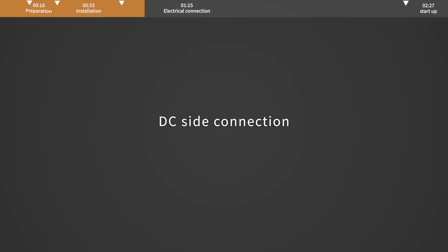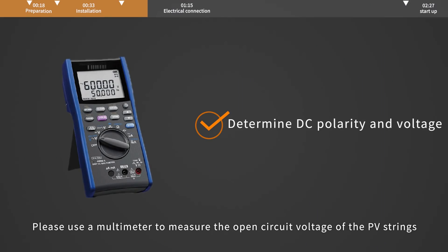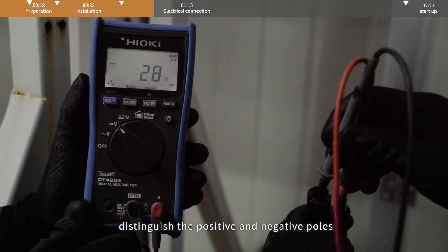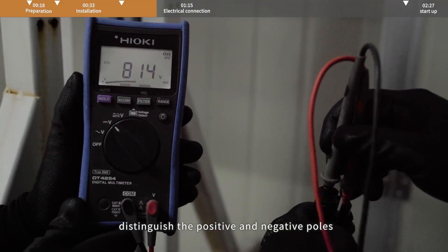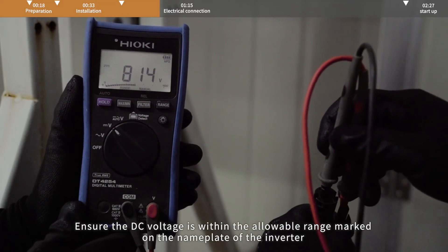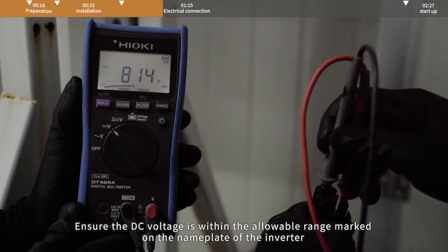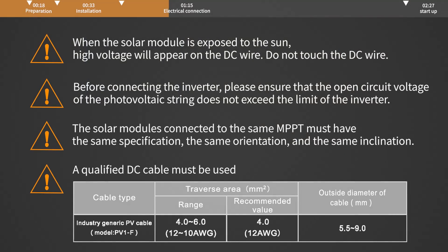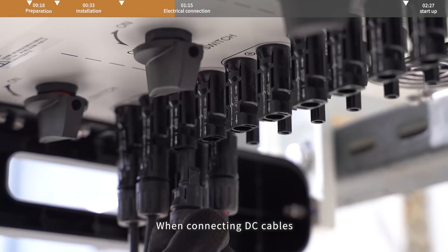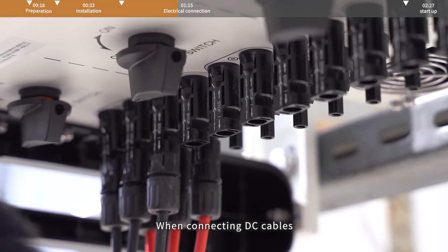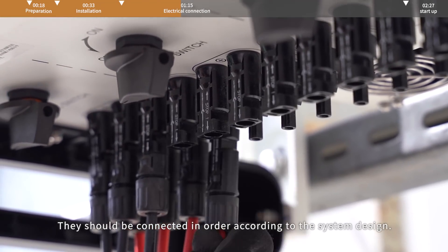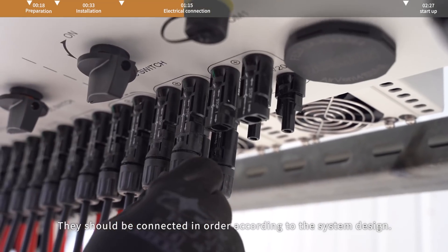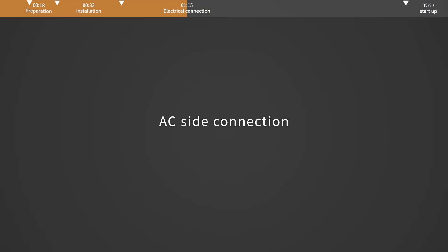DC side connection. Please use a multimeter to measure the open circuit voltage of the PV strings and distinguish the positive and negative poles. Ensure the DC voltage is within the allowable range marked on the nameplate of the inverter. When connecting DC cables, they should be connected in order according to the serial number marked on the body.